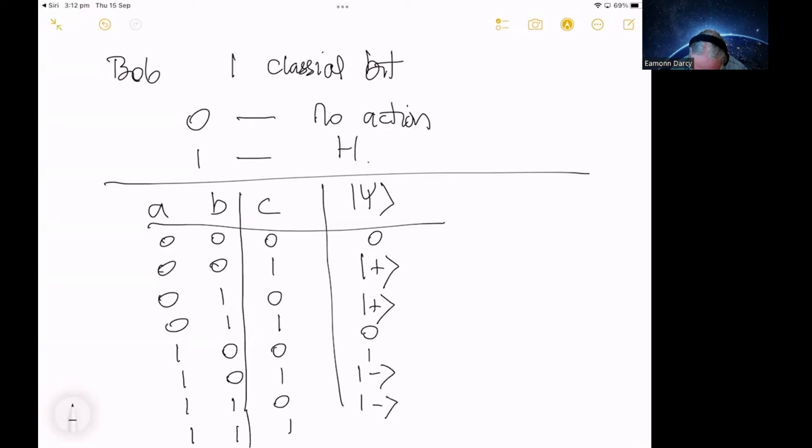So I'll show you the second one, for example, the 0 0 1. So 0 0 means that Alice takes no action. So the qubit goes to Bob in state 0. Bob gets a 1, so he applies a Hadamard gauge, and that converts the 0 to a plus.